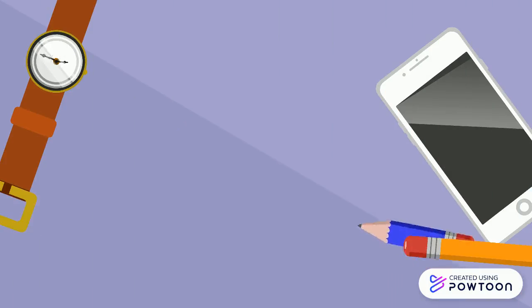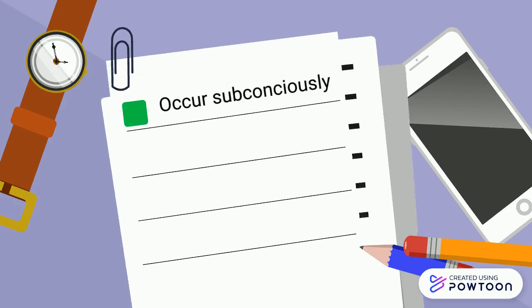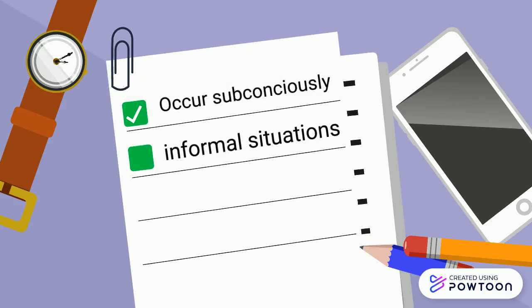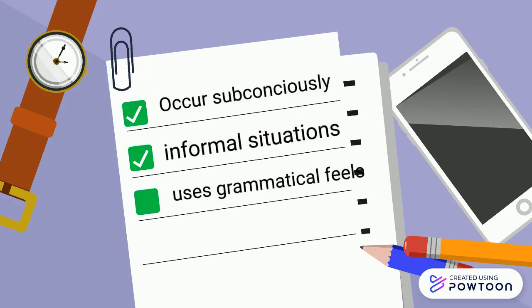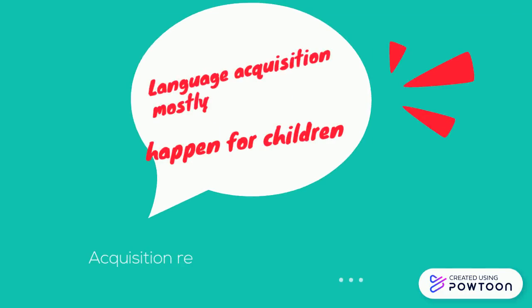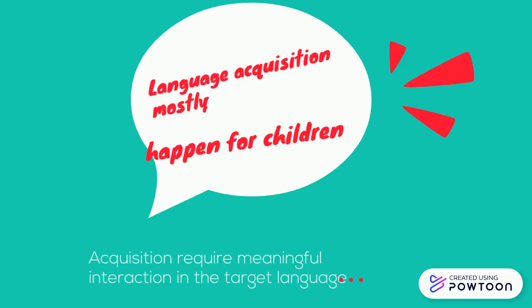There are several characteristics that distinguish between Language Acquisition and Language Learning. For Language Acquisition, it occurs subconsciously. Apart from that, it also involves informal situations. It also uses grammatical feel and depends on the attitude of the students. Language Acquisition mostly happens for children — children acquire the language instead of learning it. Acquisition also requires meaningful interaction in the target language, such as in natural communication.